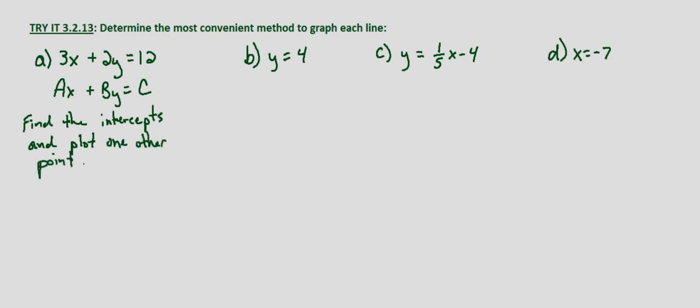In other words, plug in any value for either x or y and then solve for the other variable. Now again, you don't have to use this most convenient method if you're asked to just graph a line. It's up to you how to do it unless you're specifically told to do it a certain way. But the most convenient way anytime we're in the form Ax plus By equals C will be to find the intercepts and plot another point.